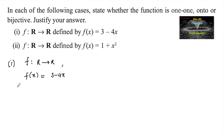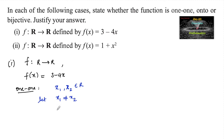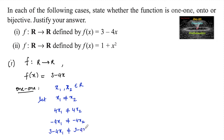Let's check for one-to-one. Let us consider x₁ and x₂ as two real numbers, and let x₁ ≠ x₂. Then 4x₁ ≠ 4x₂, which means negative 4x₁ ≠ negative 4x₂, and adding 3 to both sides: 3 minus 4x₁ is not equal to 3 minus 4x₂.